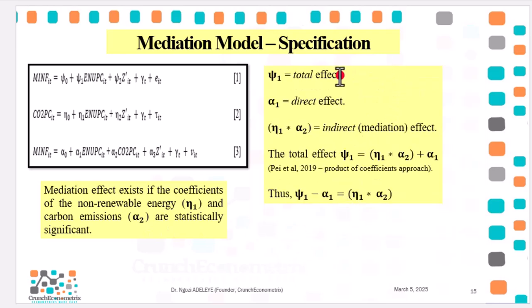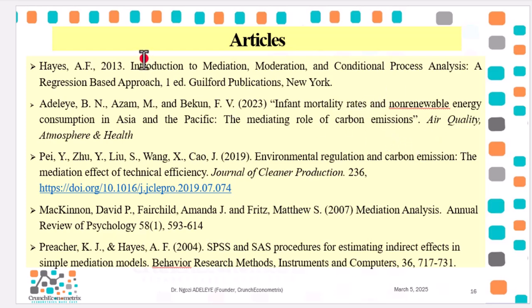To keep it simple: omega one gives total effects, alpha one captures direct effects, and the product of eta one and alpha two gives indirect effects. Using the product of coefficients approach, citing Paye et al. 2019, total effect is direct plus indirect. For more reading on mediation modeling, the references are: Hayes 2013 — very interesting and informative; my 2023 paper — reach out to me on ResearchGate to get a copy; Paye et al. 2019 for the product of coefficients approach; MacKinnon et al. 2007; and Preacher and Hayes for more information on the mediation approach.